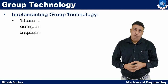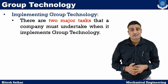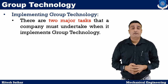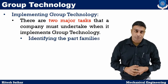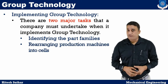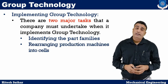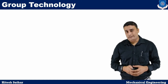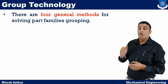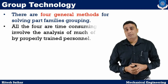Let's start with implementing group technology. There are two major tasks that a company must undertake when it implements GT. Number one, identifying the part families. Number two, rearranging production machines into cells. There are four methods for solving part families grouping.